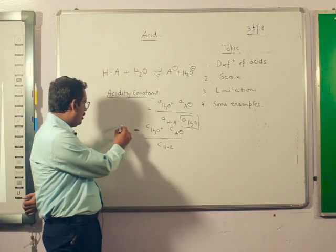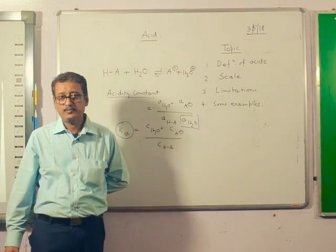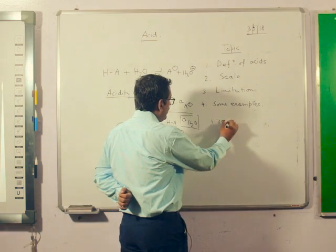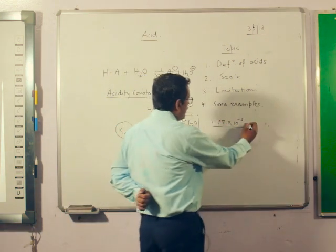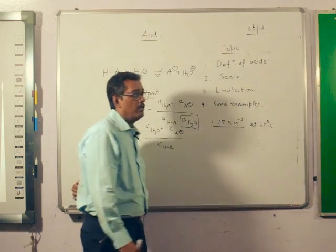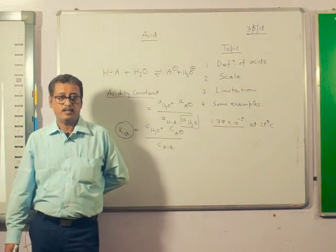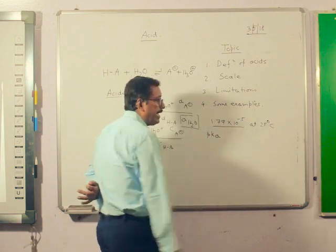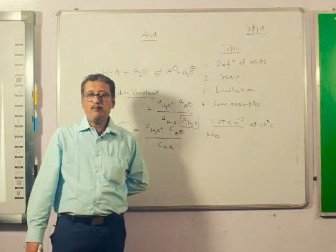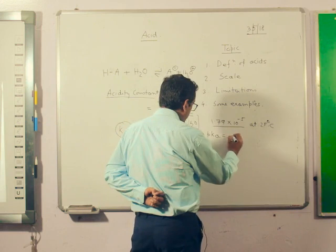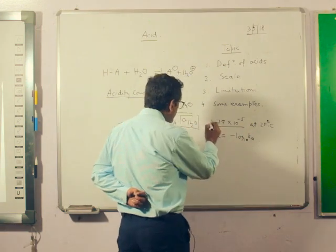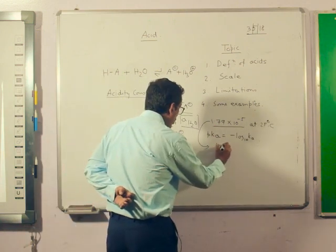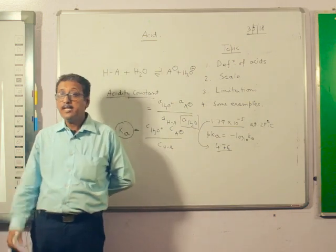Higher the value of Ka, higher will be the acidity. Suppose one acid has a Ka value of 1.79 × 10⁻⁵ at some temperature. This is not easy to remember, but it is very easy if we remember it through a new scale, pKa, where pKa is equal to minus log of Ka. So 1.79 × 10⁻⁵ is converted into 4.76. This is very easy to remember and easy to compare also.